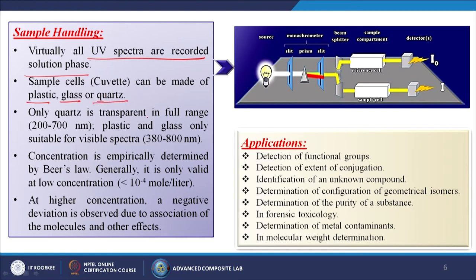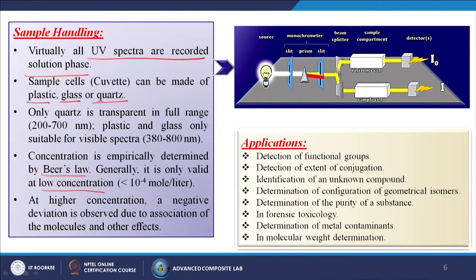Sample handling: virtually all UV spectra are recorded in solution phase. Sample cells (cuvettes) can be made of plastic, glass, or quartz. Only quartz is transparent in the full range, generally 200 to 700 nanometers; plastic and glass are only suitable for visible spectra, generally 380 to 800 nanometers. Concentration is empirically determined by Beer's law, which is only valid at low concentrations, less than or equal to 10⁻⁴ mol/L. At higher concentrations a negative deviation is observed due to association of molecules and other effects.